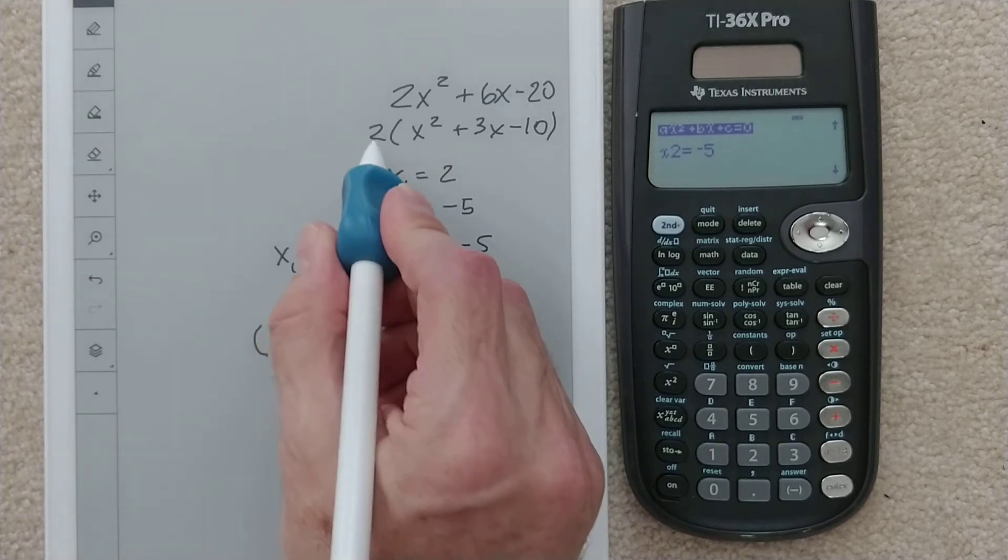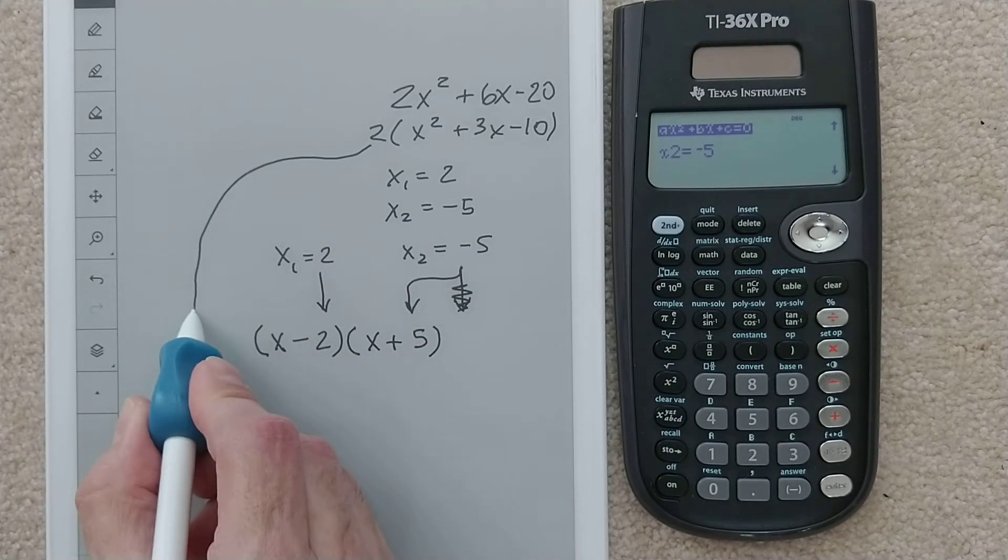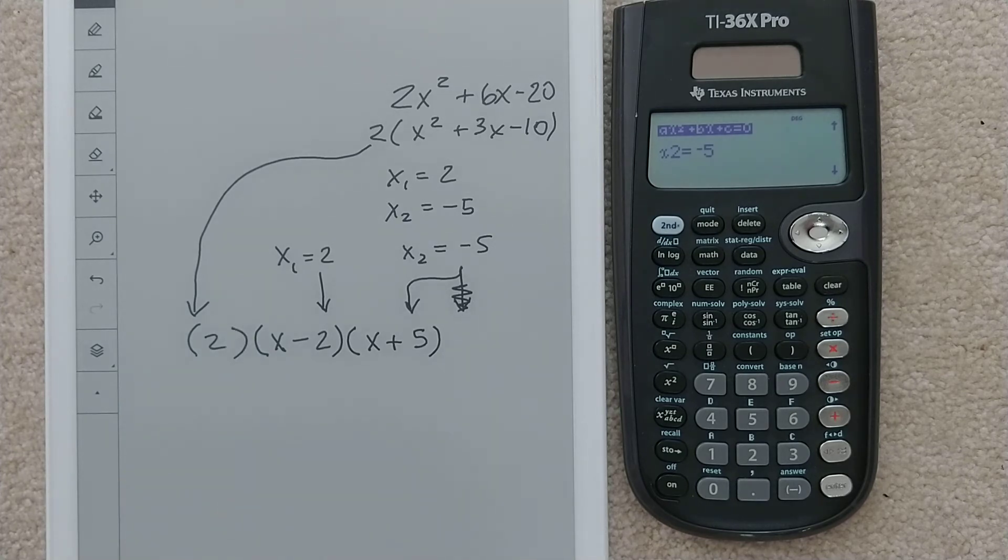And then the only other thing to be technically correct is, remember, we took that 2 out. So I'm going to put that 2 out front. It has been factored, and we did not have to do any nasty thinking. We just used our technology. How lovely.